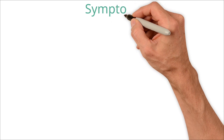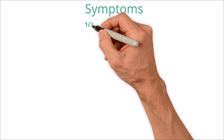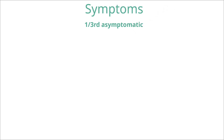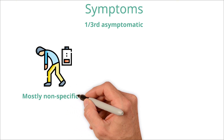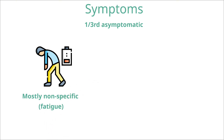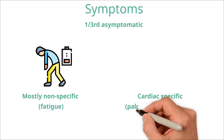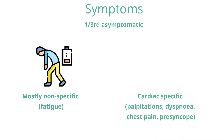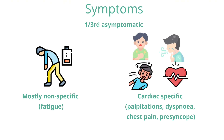Around a third of patients are asymptomatic at any particular time, although overall the majority will get symptoms at some point. Perhaps surprisingly, the most common symptoms attributed to AF are relatively non-specific and include fatigue, tiredness, and reduced exercise tolerance. More cardiac-specific symptoms include palpitations — feeling an irregular and fast fluttering in the chest — shortness of breath, chest pain, and dizziness. Patients also report a higher prevalence of anxiety and depression than the average population.